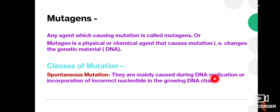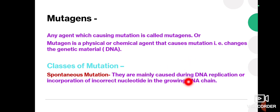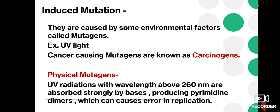The main cause of spontaneous mutation is basically an error during the incorporation or mismatch of DNA bases during replication, or incorrect incorporation of nucleotides in the growing DNA chain. These are called spontaneous mutations.